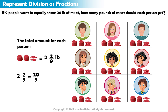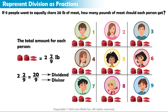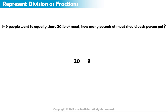Notice that the numerator in this fraction represents the dividend, and the denominator is the divisor — the number of equal groups, which in this case is the number of people who want to share the meat equally. So to solve the original problem, all we had to do is take the numbers we have and represent the division as a fraction. If we want to split 20 pounds of meat equally among nine people, we write twenty-ninths.